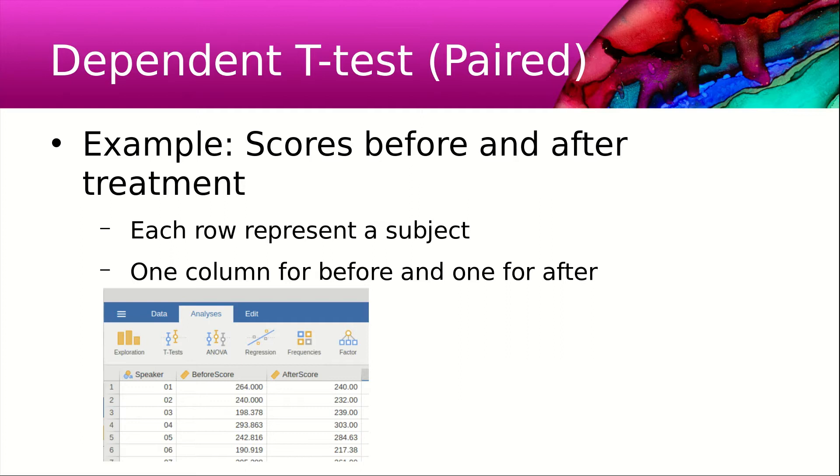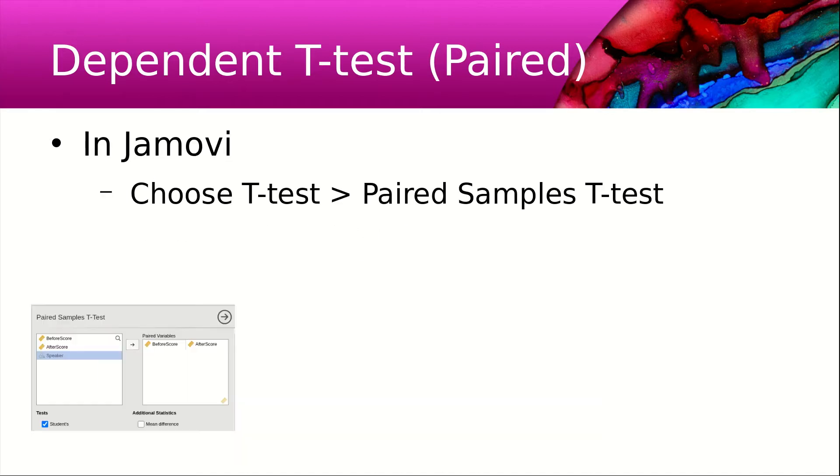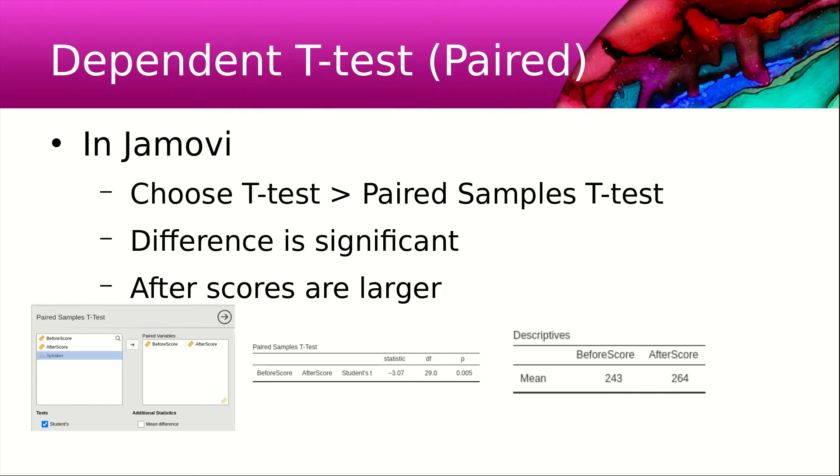In this case, each row represents a subject, and there's one column for the before and one column for the after scores. To do this in Jamovi, we choose t-test, paired samples t-test, and put both variables in the right-hand box. What we see is that the difference is significant, and when we look at the means, the after score is larger than the before score.